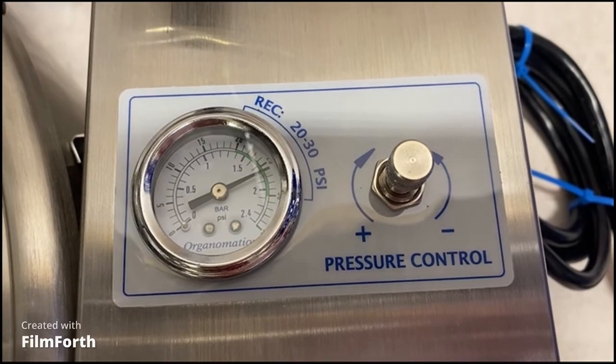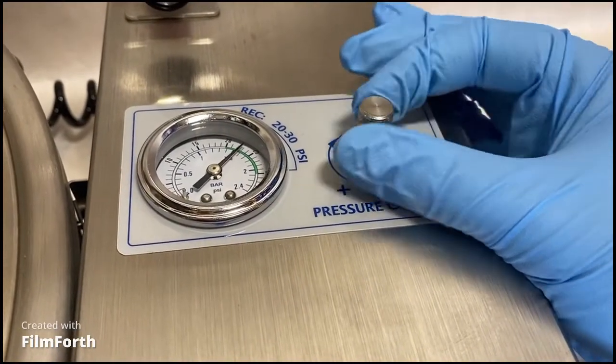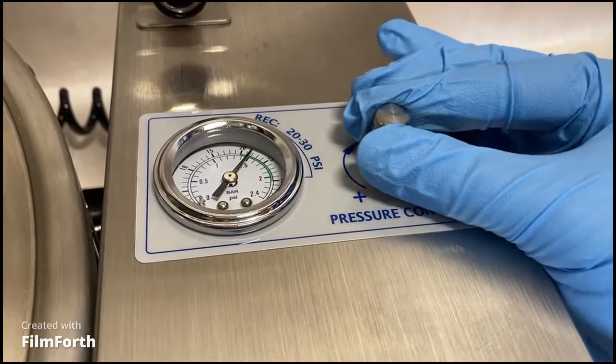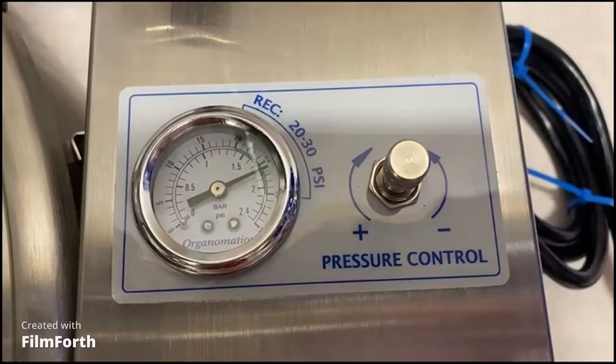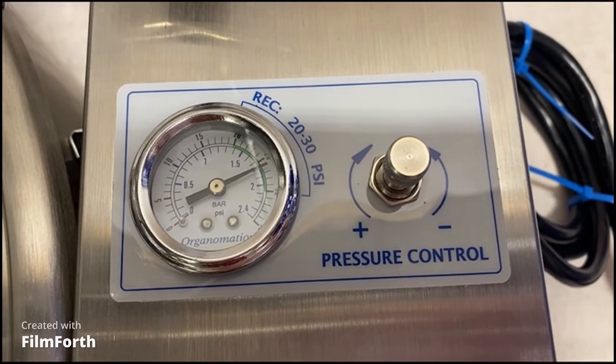To do so, locate the knob on the top of the unit labeled flow meter. Rotate it clockwise and observe the pressure gauge for movement. The gauge should go up when the knob is turned clockwise and down when it is turned counterclockwise. If the gauge responds, set it between 20 to 30 psi. Turn on the gas switch and recheck the flow.